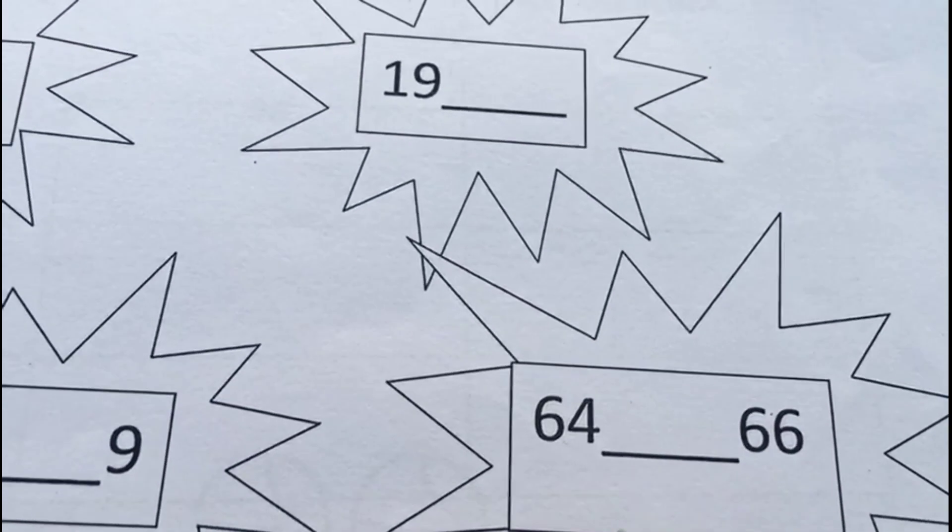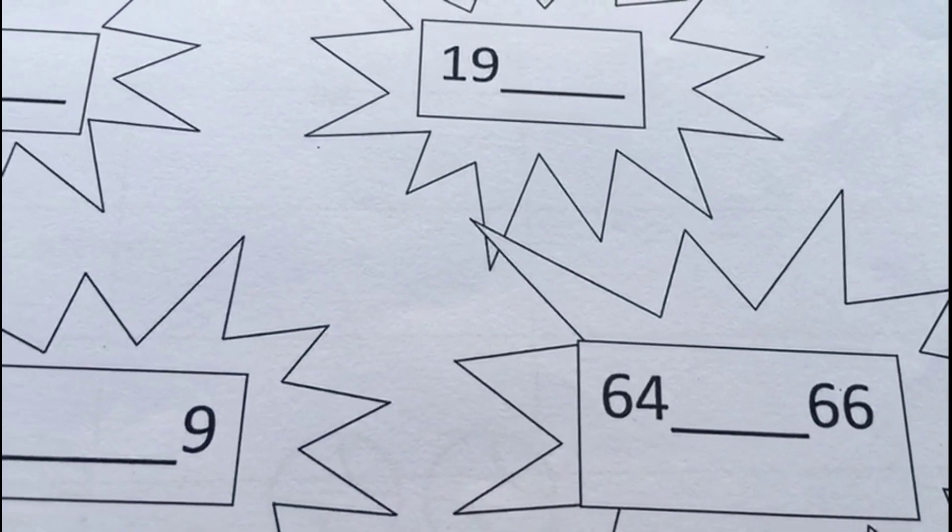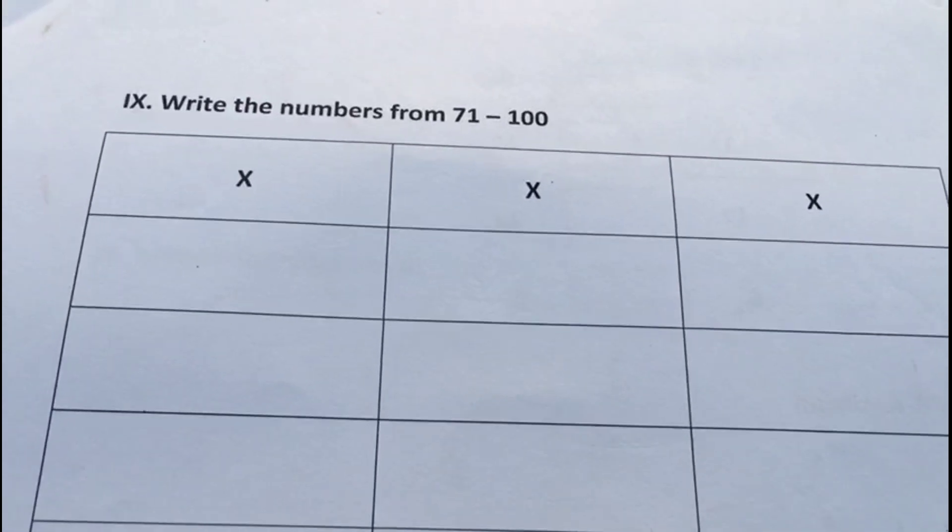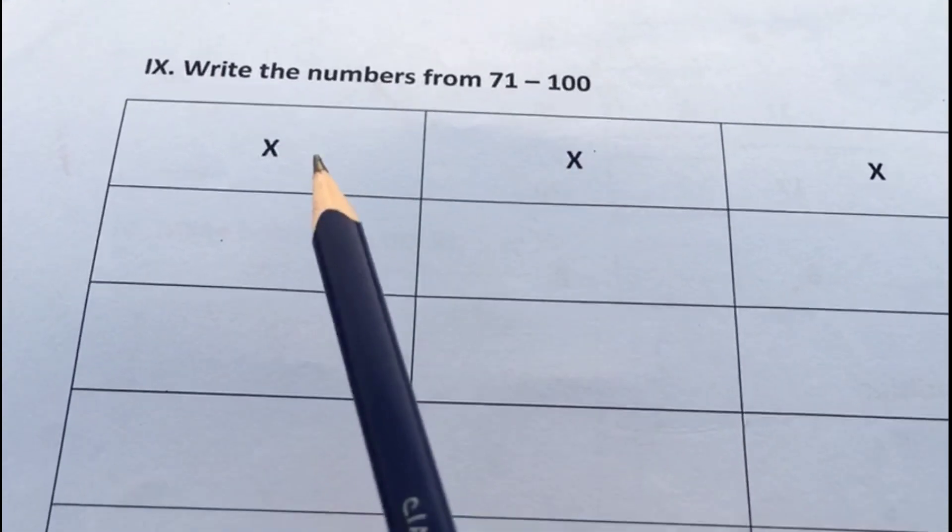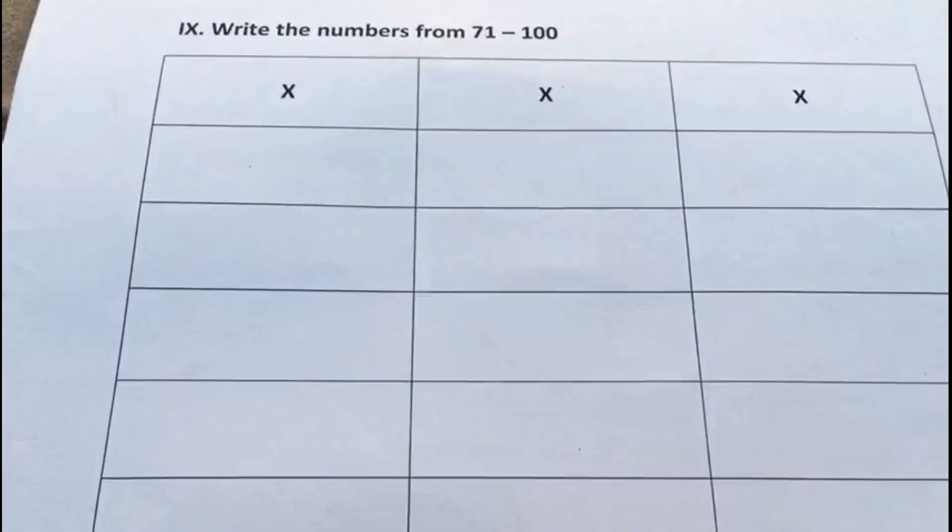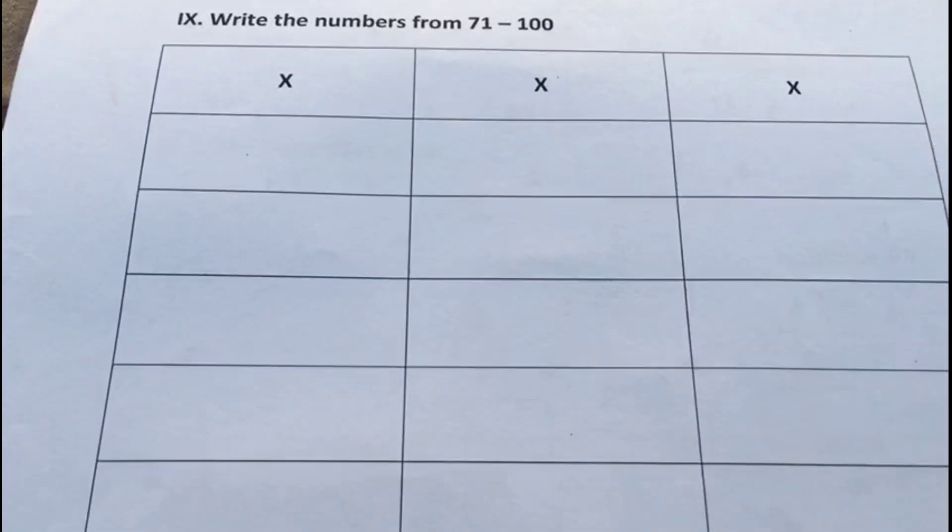This is the last question of this question paper: question number 9, write the numbers from 71 to 100. There is a space given here: 71 to 80, and 81 to 90, and 91 to 100.